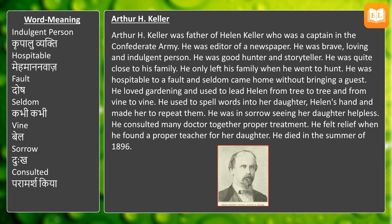Arthur H. Keller was the father of Helen Keller. He was a captain in the Confederate Army and also an editor of a newspaper. He was a brave, loving, and indulgent person. He was a good hunter and storyteller, and was quite close to his family. He only left his family when he went to hunt. He was hospitable to a fault and seldom came home without bringing a guest.